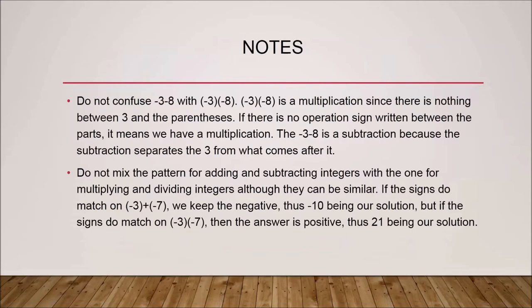Before we end this lecture, here are two important tips. Tip one: do not confuse minus three minus eight, which is a subtraction, with minus three multiplied by minus eight, which is a multiplication. The reason the parenthetical form is a multiplication is that there is no operation sign between the parentheses — when there's no operating sign between parentheses, it automatically means multiplication. The written form with a subtraction sign is subtraction.